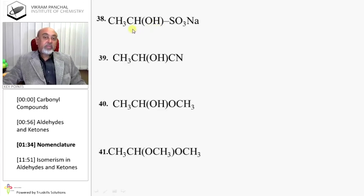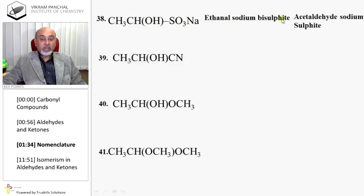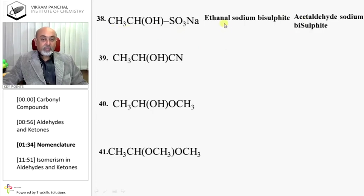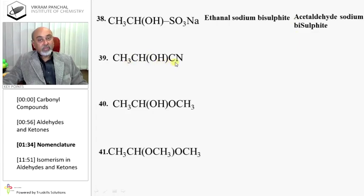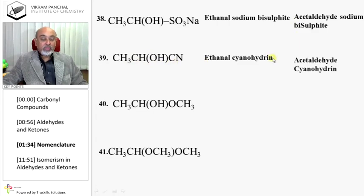This is a derivative of ethanal obtained with sodium bisulfite, so it is known as ethanal sodium bisulfite addition product, or acetaldehyde sodium bisulfite. This is obtained from ethanal and HCN. When one carbon contains both an OH group and a cyanide group, it is known as a cyanohydrin. So it is ethanal cyanohydrin, or acetaldehyde cyanohydrin.